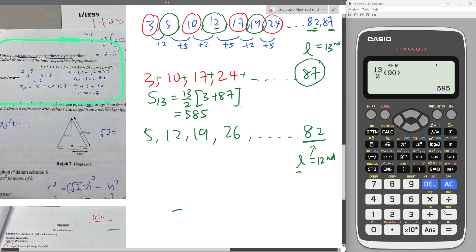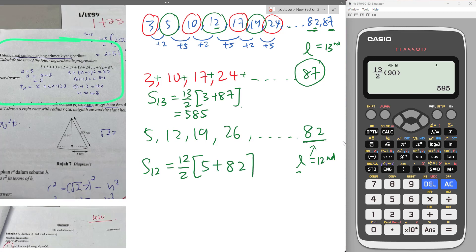Then I'm going to do the same formula for the second progression. So I do s12, sum of all the 12 terms here. So it's 12 over 2, then first term plus last term. So 5 plus 82 is 87. So this is 522.